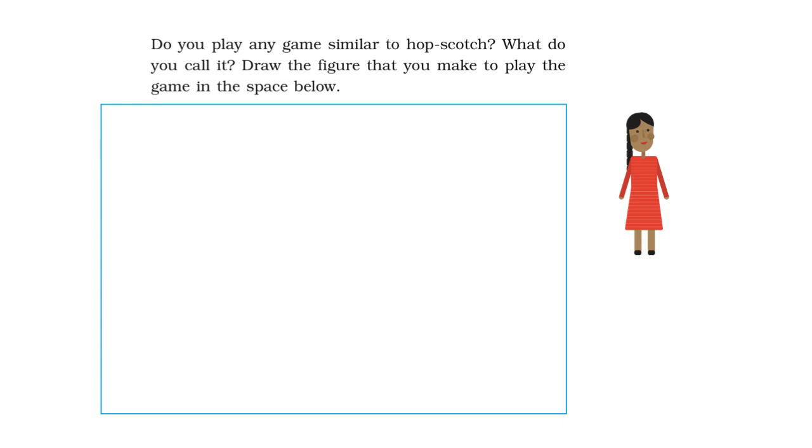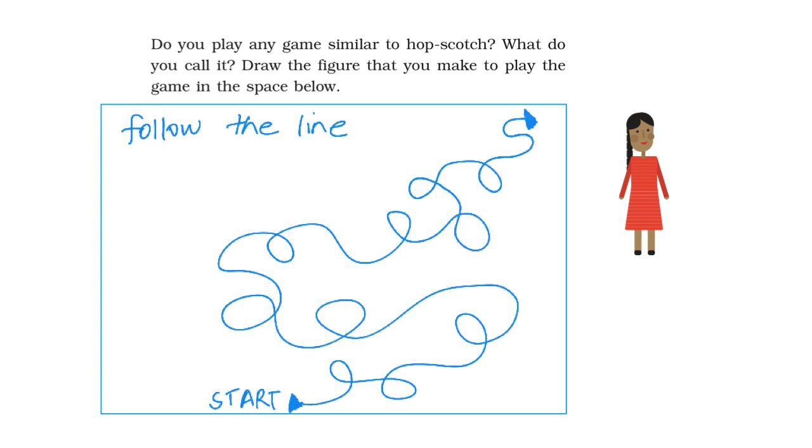So Sita says she plays a game with her friends called follow the line. How do they play it? They draw lines as shown in the picture here on the ground. And then each player has to walk along the line without stepping outside the line. The player who finishes the full path and reaches the end wins the game. This game is called follow the line.